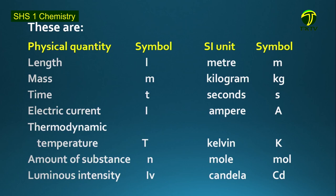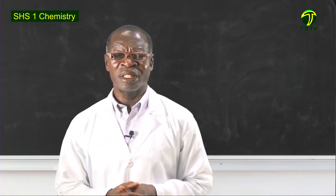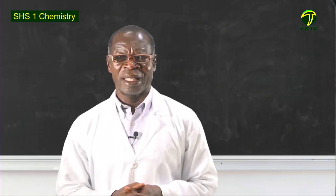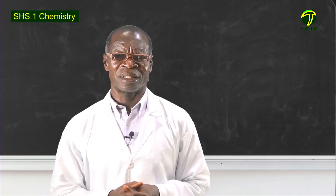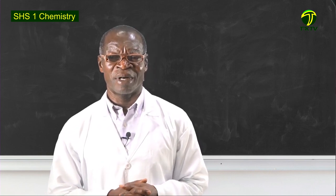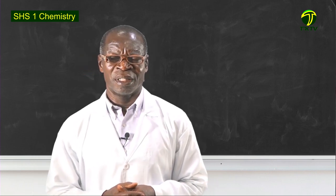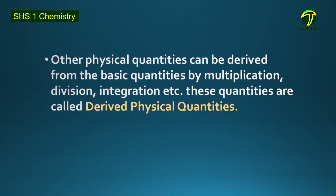So these seven quantities are considered as basic physical quantities. We have other measurements that we do, and they are physical quantities, and we call them derived. Why do we call them derived? They are obtained or derived from the seven basic physical quantities by either multiplication, division, or integration. Let's look at examples of these derived quantities.